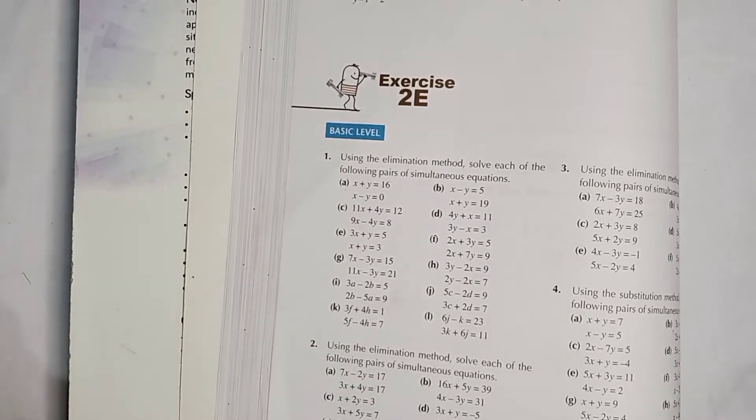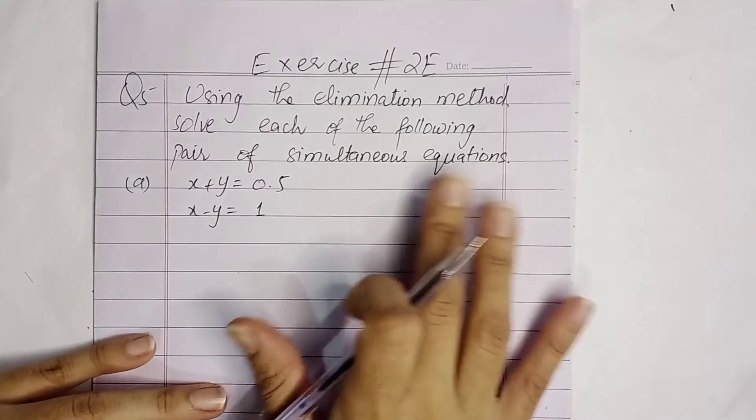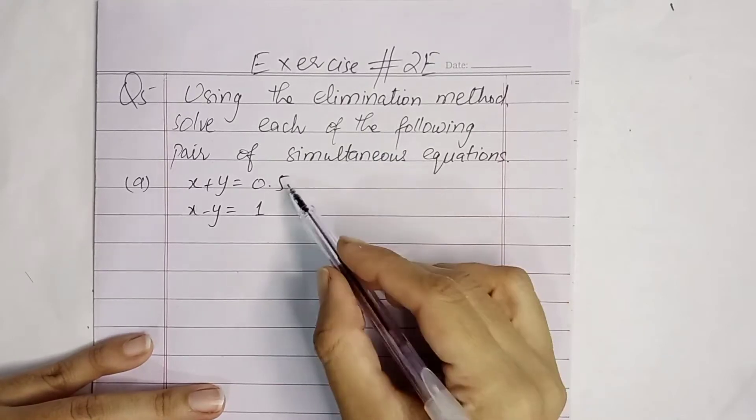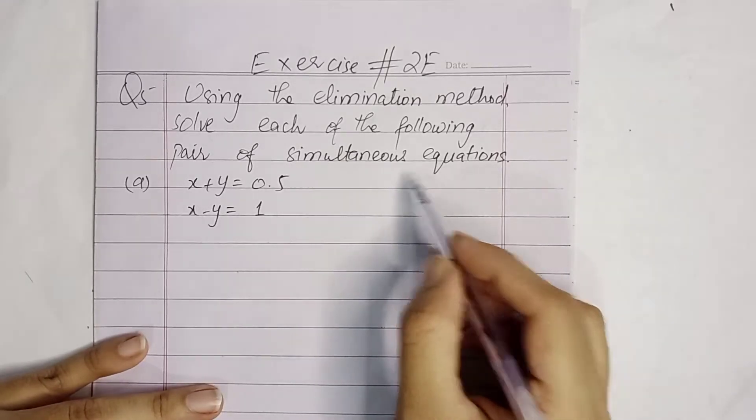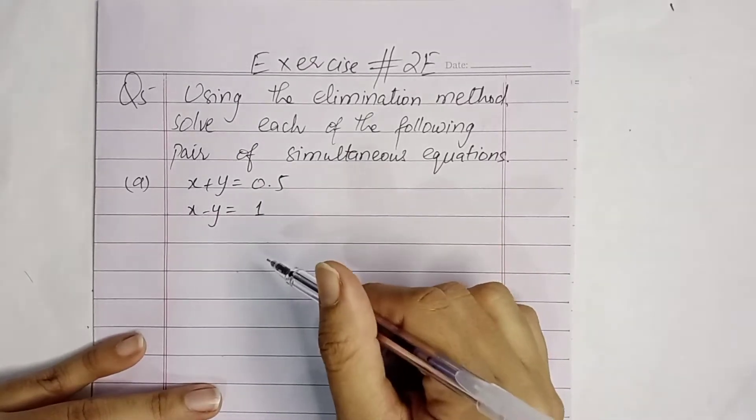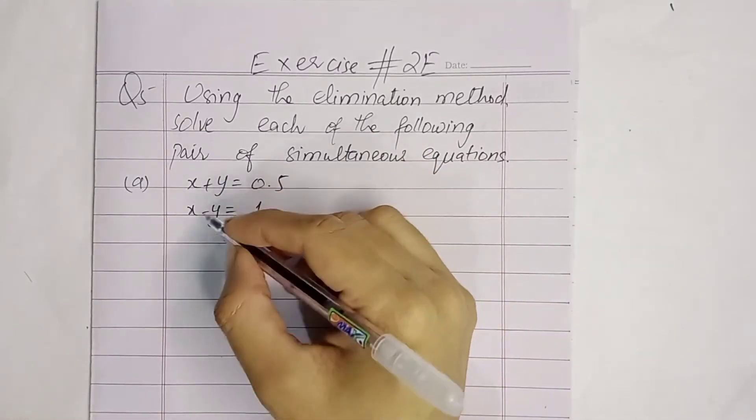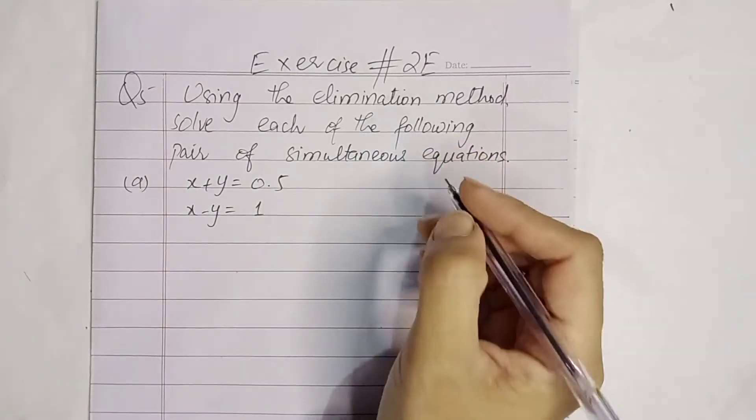Bismillahirrahmanirrahim, Assalamualaikum. This is Exercise 2E of book D2. Today we will do question number 5 of intermediate level. Let's start. Using the elimination method, solve each of the following pair of simultaneous equations. We have to use the elimination method to solve simultaneous equations where we have to find out x and y.